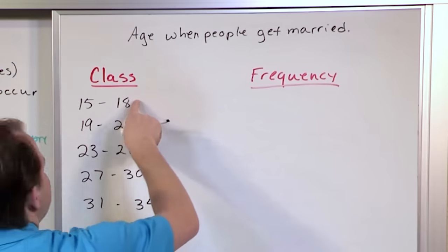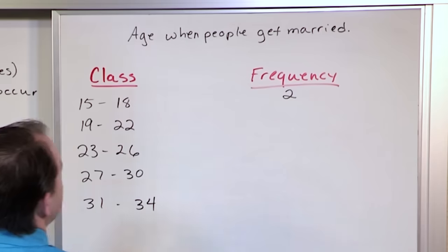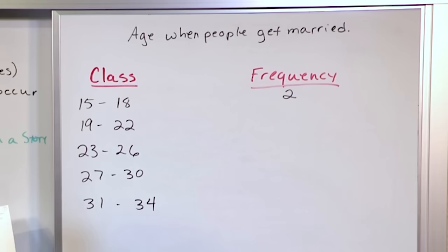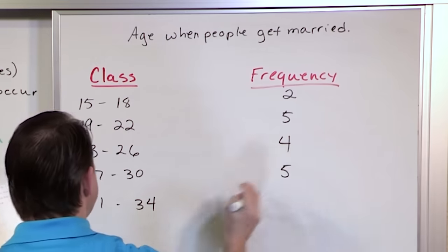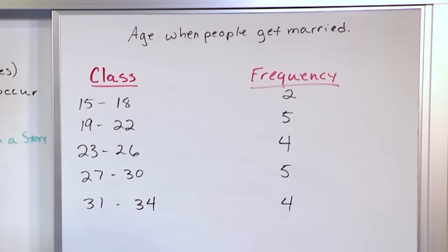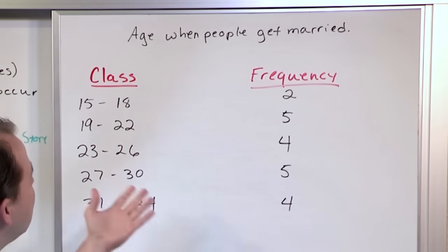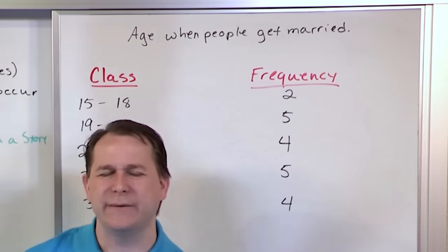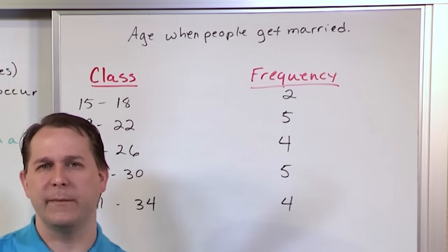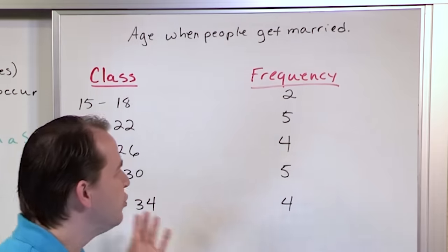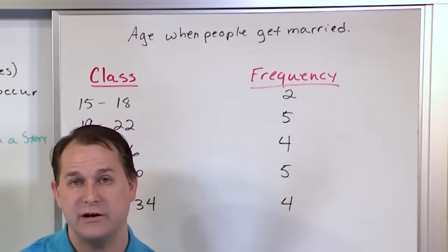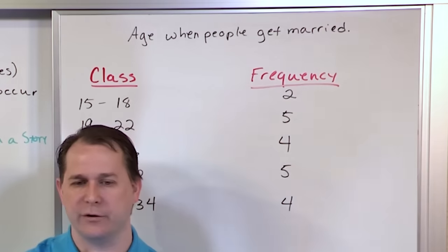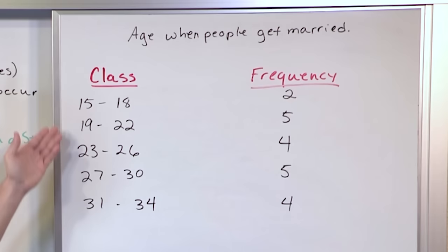We might find that in the range of 15 to 18 years of age, two people in our survey got married. In 19 to 22, five people got married. In 23 to 26, four people. In 27 to 30, five people. In 31 to 34, four people got married. To find the sample size from this table, you simply add up all the frequencies — that gives you the total number of respondents, because all you're doing is taking your raw data and putting it into class buckets.